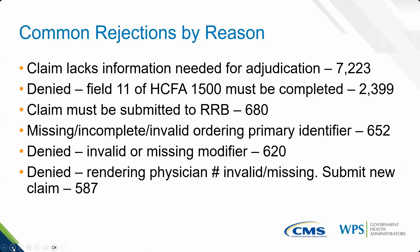The third common rejection by reason is that the claim must be submitted to the Railroad Retirement Board (RRB). This rejection is common because the claim is submitted to WPS when it needs to go to Palmetto GBA, which is the MAC that processes claims for Railroad Retirees — 680 claims rejected for this reason over those three months. When you look at a Medicare beneficiary's Medicare card, for Railroad Retirees you will see 'Railroad Retirement Board' printed along the bottom of their Medicare card.